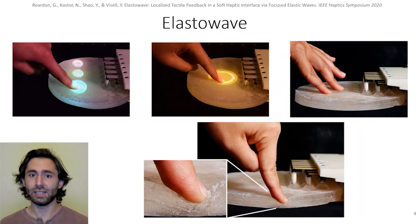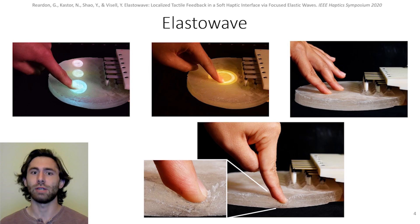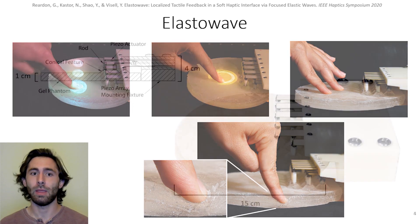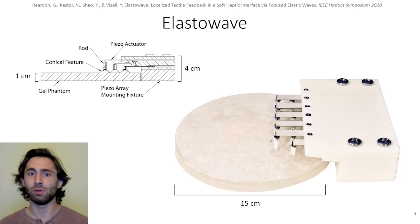To test the feasibility of this idea, we constructed the Elastowave: a soft haptic interface composed of synthetic medical gelatin and an array of 16-phase electric actuators. We leverage mechanical transmission in the medium to position the actuator array away from the active space of the interface, allowing it to be greatly deformed, bent, and stretched.